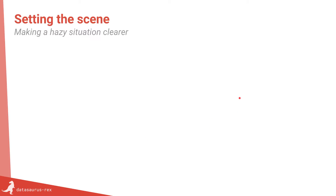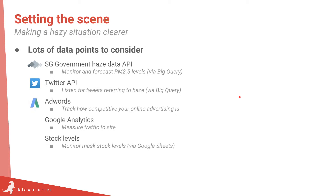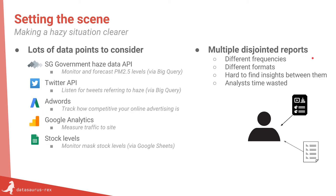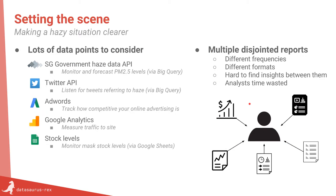How do we do that? There are many different data sources you could access. We've got haze data from the Singapore government, Twitter data from their API, AdWords data which is your search marketing and advertising spend, Google Analytics for website traffic data, and stock levels in a Google Sheet. Right now you probably have all these data feeds coming in separately — very disjointed, at different frequencies and different formats — and it's hard to find insights between them. Equally, you're wasting your analysts' time generating these manually and being a data monkey.